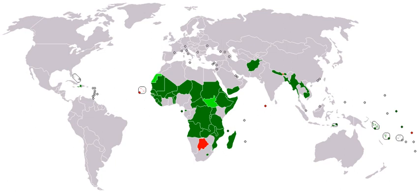The UN acknowledges that it has no established convention for the designation of developed and developing countries or areas. According to its M49 standards, published in 1999, the designations 'developed' and 'developing' are intended for statistical convenience and do not necessarily express a judgment about the stage reached by a particular country or area in the development process. The UN implies that developing countries are those not on a tightly defined list of developed countries.